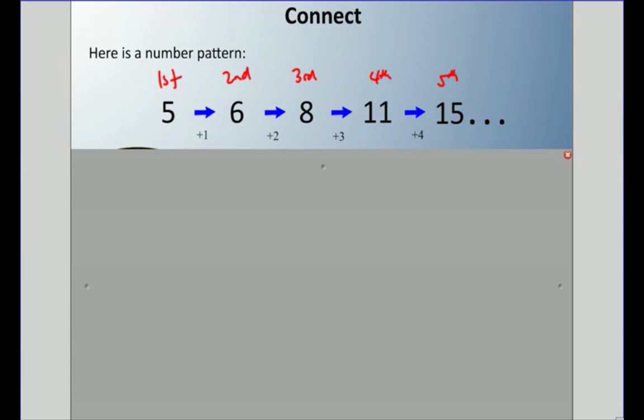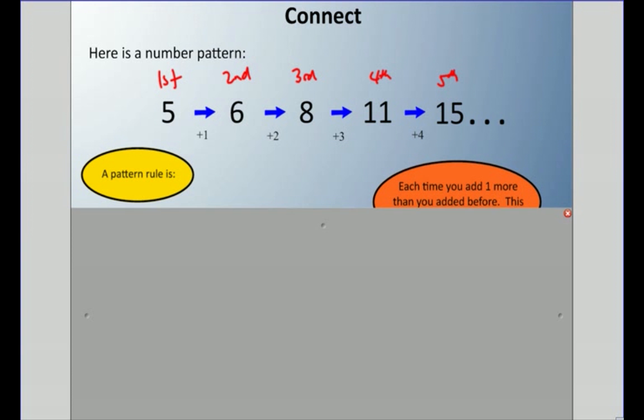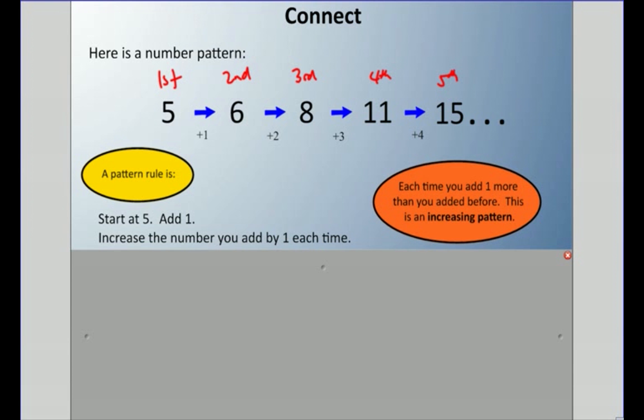So it goes from five to six, it goes up one. It goes from six to eight, it goes up two. From eight to eleven, it goes up three. Eleven to fifteen, it goes up four. There is a pattern going on there. So here's a number pattern. And a pattern rule is, for this, we start at five and we add one. But each time we add one, we increase by one each time. So we start at five, we add one. But each time we add the number, we add one. And you can see it goes up from one to plus two, plus three, plus four. It's going up one each time. Well, any time we add one more than we added before, we call it an increasing pattern. Increasing. It's going up. The pattern keeps going up and up.